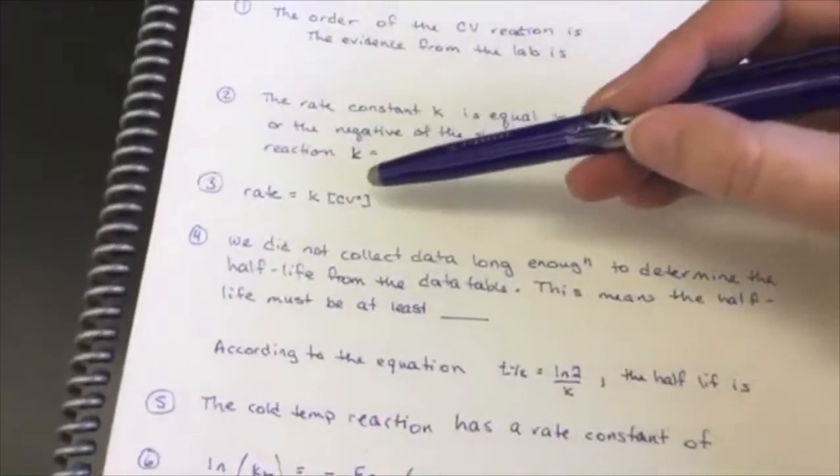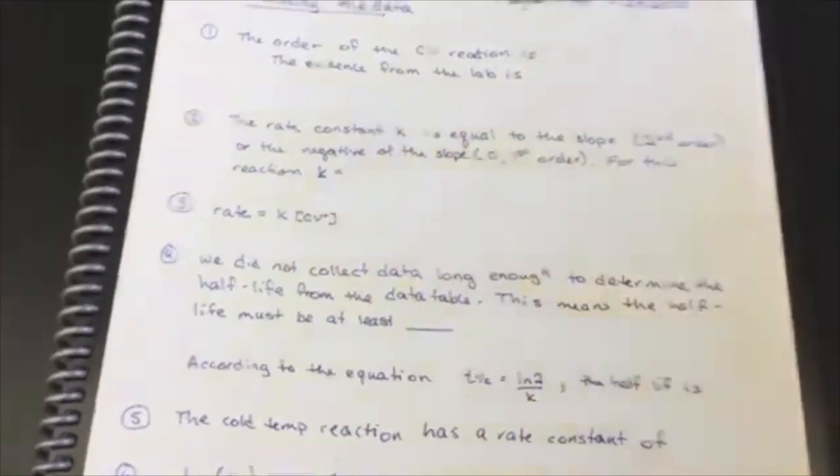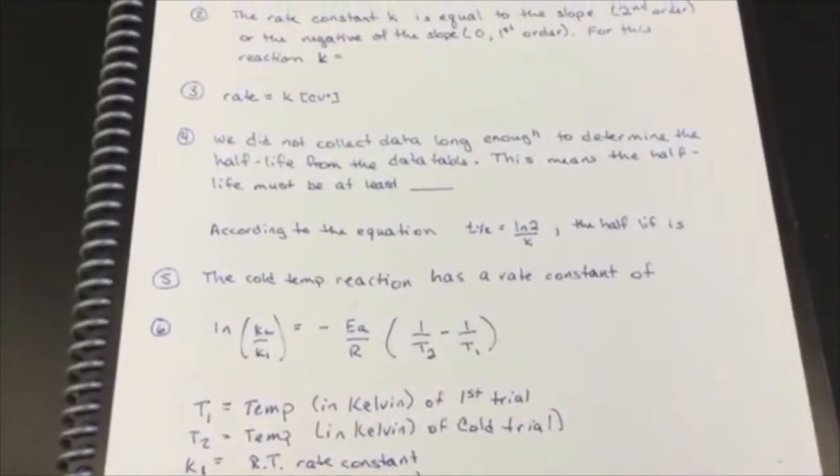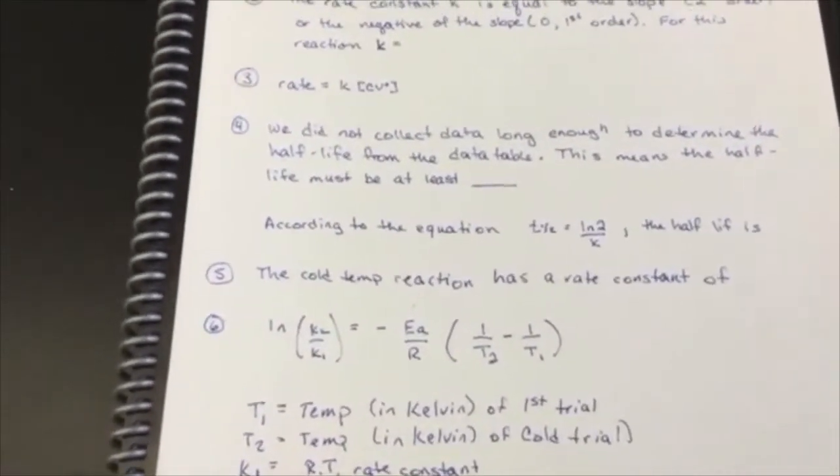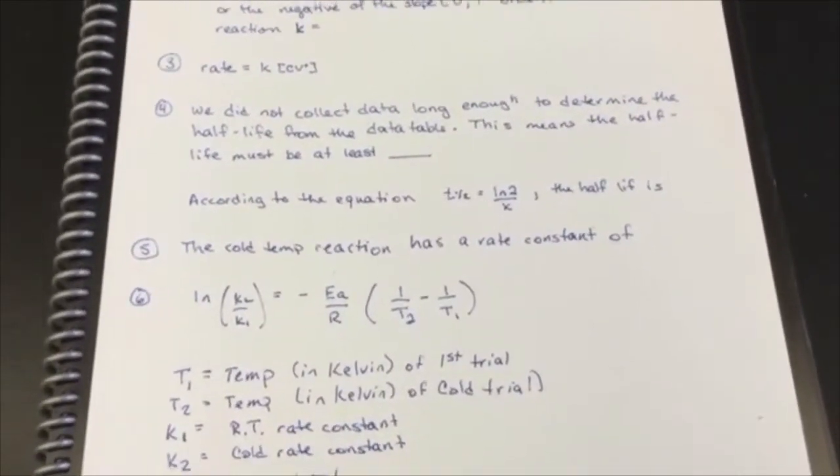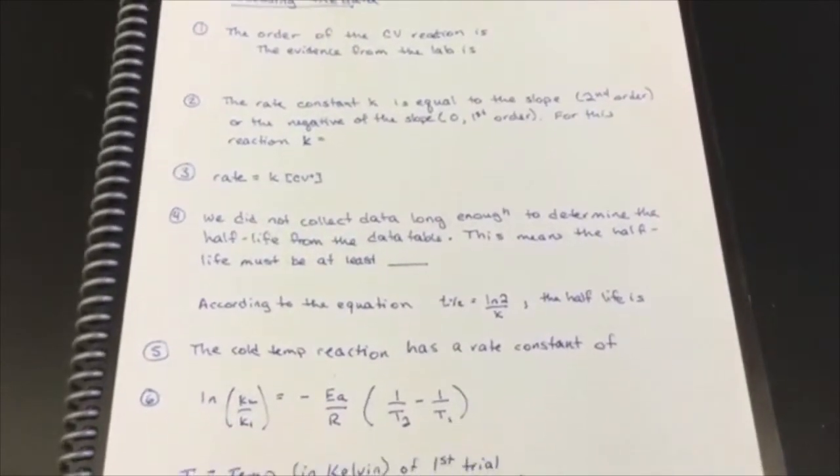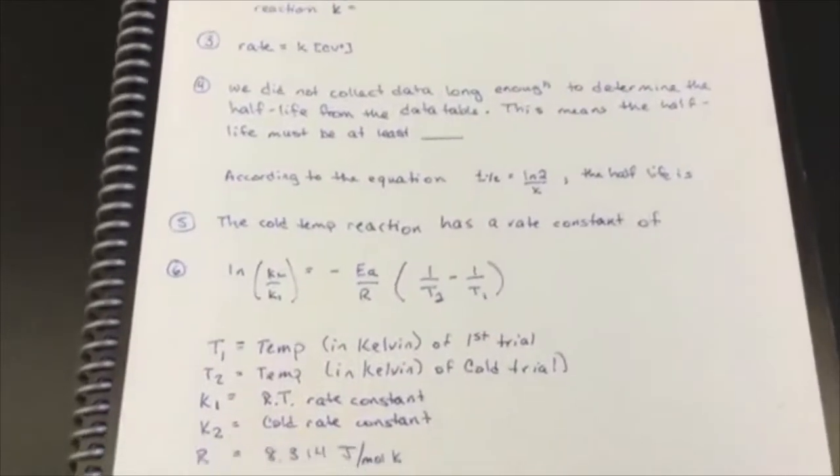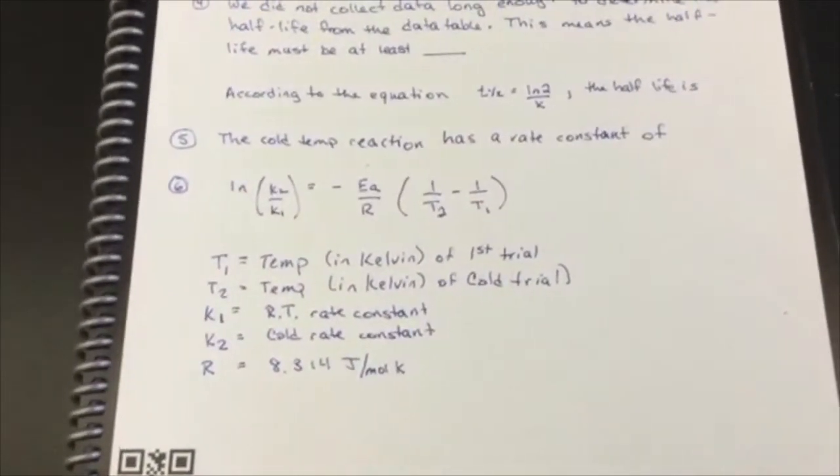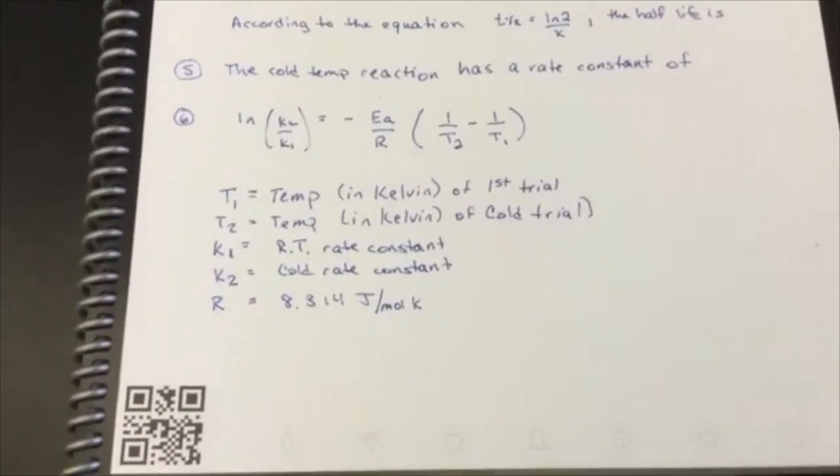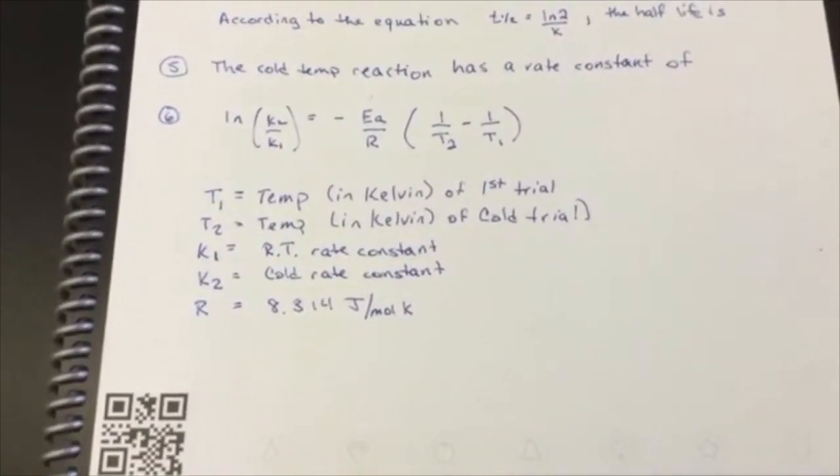We didn't collect enough data in order to determine the half-life according to the first part of question 4. You might be able to consider how we would know that just by looking at the data. Nonetheless, you can answer the question about what the half-life is by using the equation. Repeat the collection of the rate law and the rate constant for the cold temperature data and use it to solve for the activation energy. The equation is shown here with the variables defined.